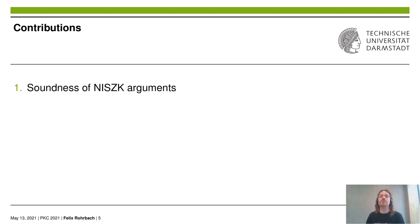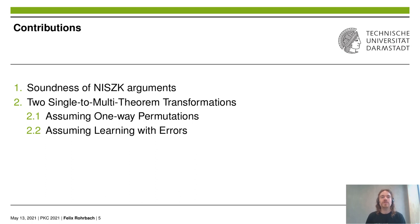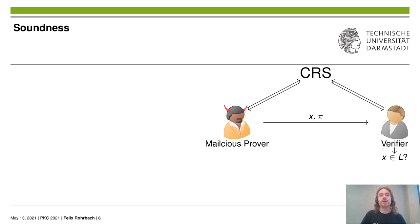Our contributions in this paper are twofold. First, we analyze, in a more fine-grained way, different soundness properties for non-interactive statistical Zero-Knowledge arguments. Second, we give two transformations from single-theorem to multi-theorem Zero-Knowledge using common random strings: one assuming the existence of one-way permutations, and the other assuming the hardness of the learning with errors problem.